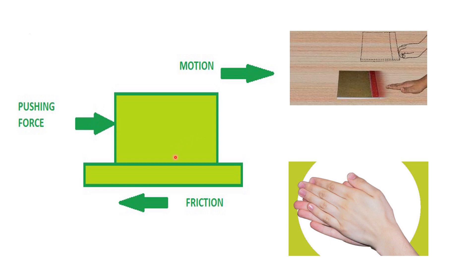Friction is caused by irregularities on the two surfaces in contact. In this diagram, we are trying to push this book. In this case also, a friction force is working. If our pushing force is more than the friction force, the book starts moving.